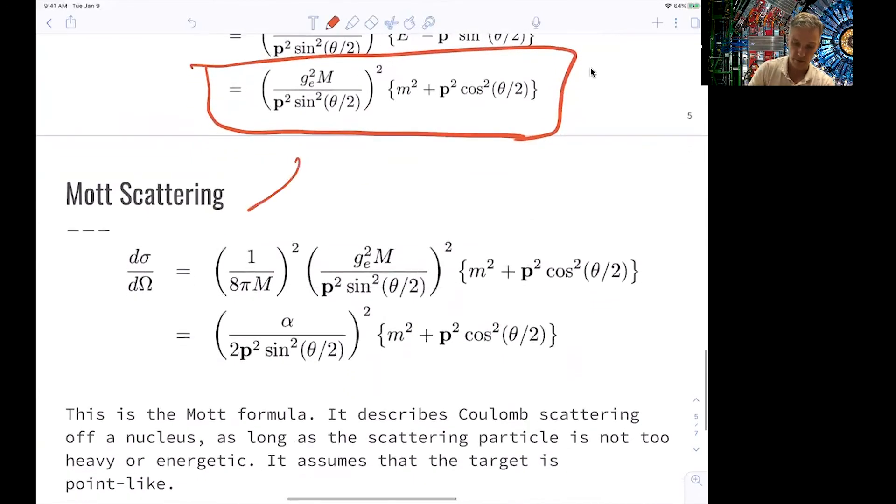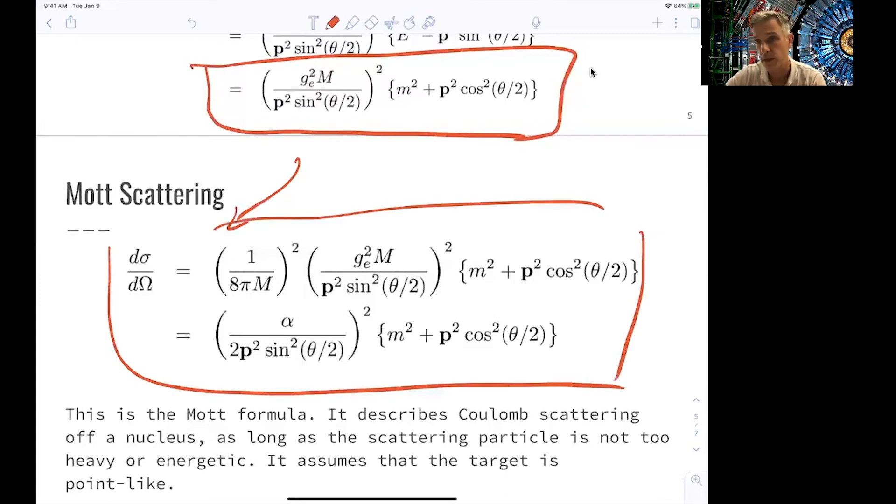And if you then add this to Fermi's golden rule, you find this equation for your Mott scattering. Again, this is the scattering of two spin-half, different spin-half particles, where one is much heavier, the outgoing momenta are small, and the recoil of the heavier particles can be neglected.